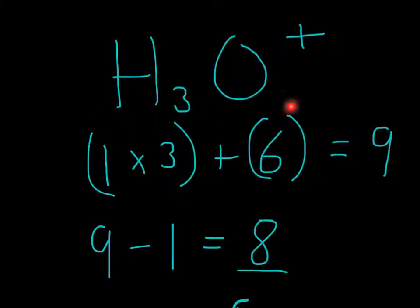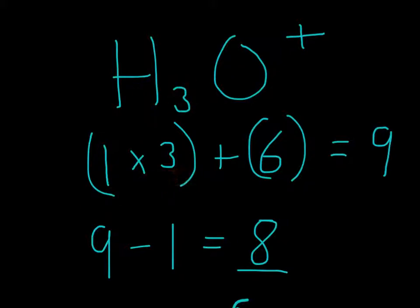For this compound, we have H₃O⁺. The first thing we'll do is look at the group number to determine the number of electrons. For hydrogen, it's in group 1, so we have 1 with a subscript of 3 — 1 times 3. Oxygen is 6. So 3 plus 6 is 9 total.